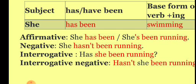In case of interrogative sentence, for positive, the structure is: has/have plus subject plus been plus base form of verb plus -ing. For example: Has she been running?